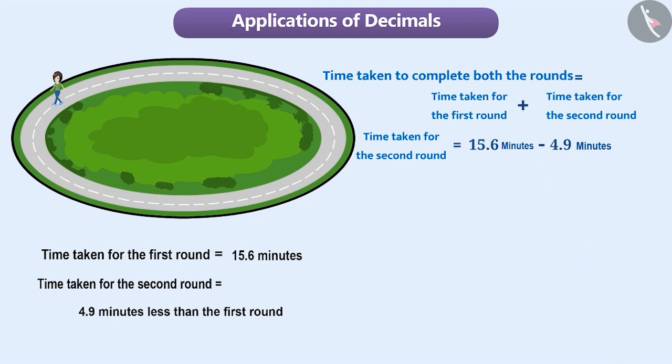You got it right. First, we write the decimal numbers one below the other so that the digits at similar places fall in the same column. Then, we subtract them the same way as we subtract whole numbers. And, we keep the decimal point in the decimal point column. By doing this, we get the time taken by her to complete the second round as 10.7 minutes.